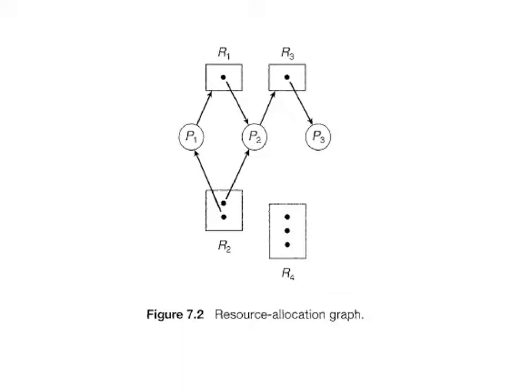The set P consists of all active processes in the system. And R = {R1, R2, ..., RN} is the set consisting of all resource types in the system.